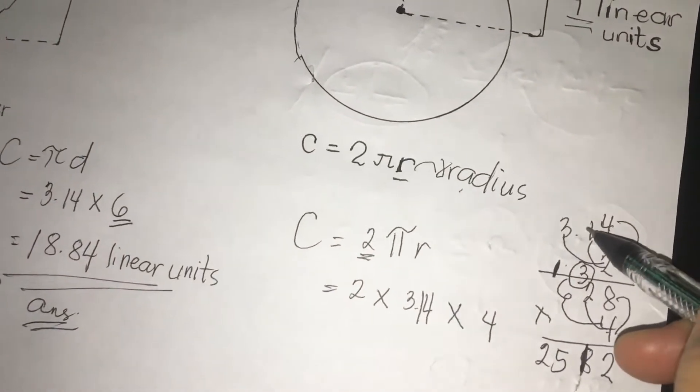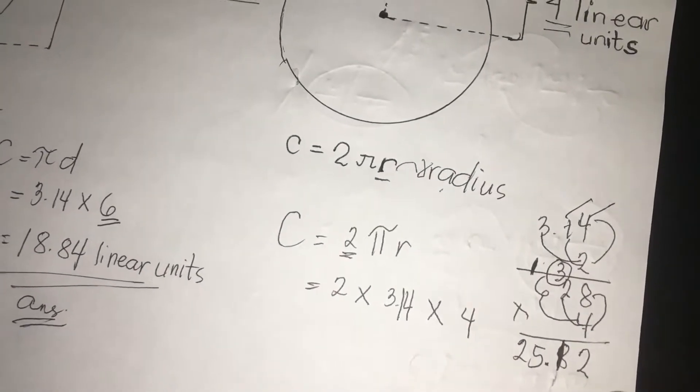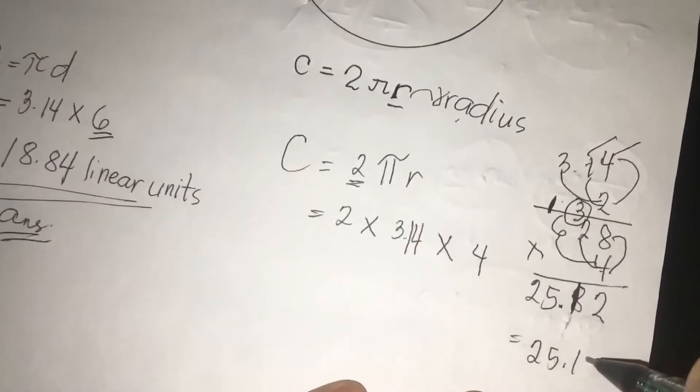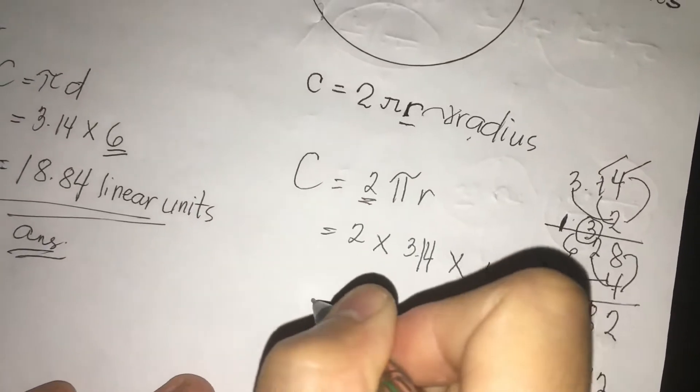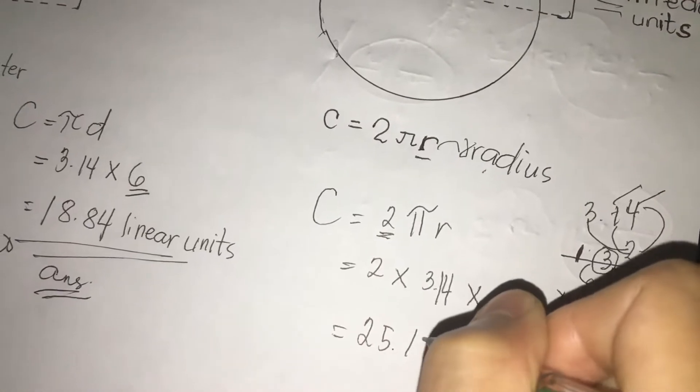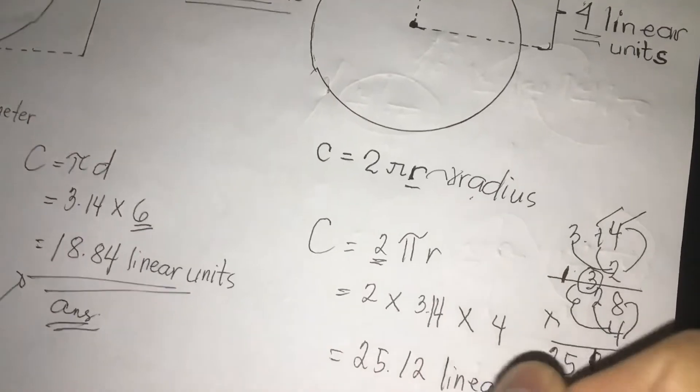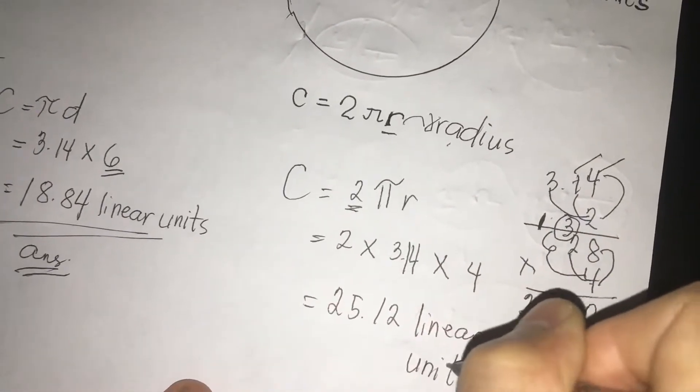Let's just count first, 1, 2. We have here 1, 2. So our answer is, I'm going to rewrite, 25.12. This will be our final answer, 25.12. Don't forget to write linear units.